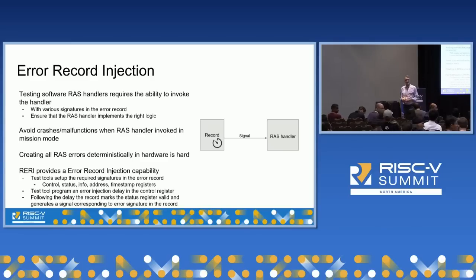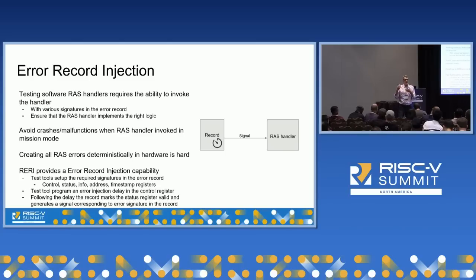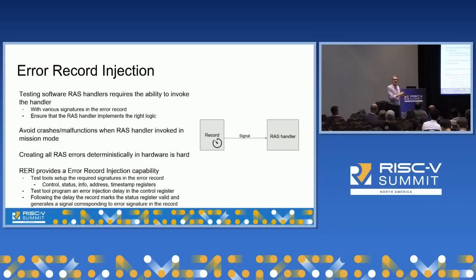Q: All the counters seem to be for corrected errors. What happens to uncorrected errors — do they never need to be counted? A: Uncorrected errors aren't counted because they are dealt with right then and there — either deferred through poisoning or treated as serious critical errors that must be signaled immediately. With correctable errors, the system corrects and continues with no immediate need to inform system software. However, the correctable error counter can be configured so that the first corrected error immediately signals, or only after 100 corrected errors. Uncorrected errors need to be signaled right away; corrected errors can be batched.